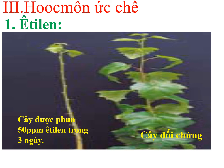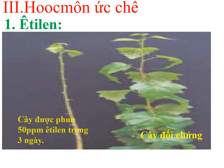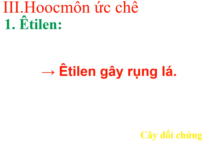Tiếp tục quan sát hình ảnh: hai cây như nhau đang trong thời kỳ sinh trưởng mạnh, một cây có xử lý ethylene và một cây không xử lý ethylene. Sau 3 ngày thì cây được xử lý ethylene lá rụng hoàn toàn. Điều đó chứng tỏ ethylene còn có tác dụng gây rụng lá ở thực vật.